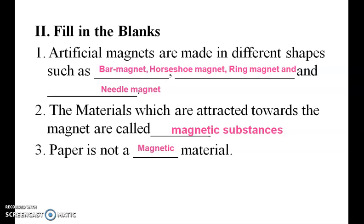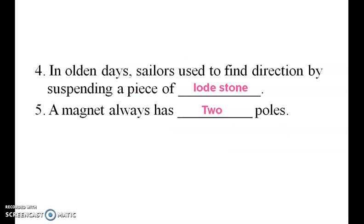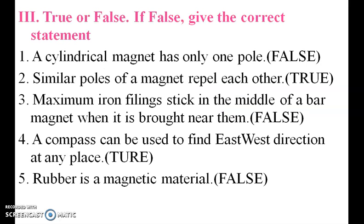There are other shapes also, like oval magnet. The materials which are attracted towards magnets are called magnetic substances. Paper is not a magnetic material. In olden days, sailors used to find direction by suspending a piece of lodestone. A magnet always has two poles — north and south.